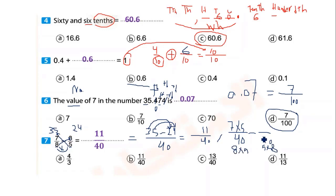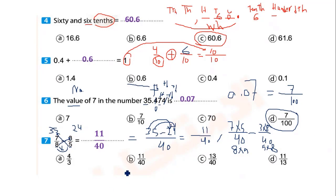Using the second method: multiply eight by five equals forty, then thirty-five over forty minus twenty-four over forty. The result after subtraction is eleven over forty, which is answer B.